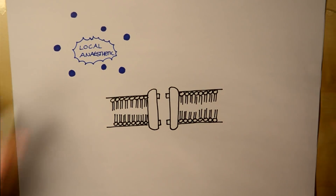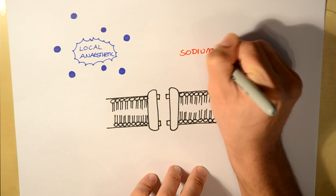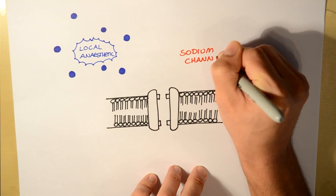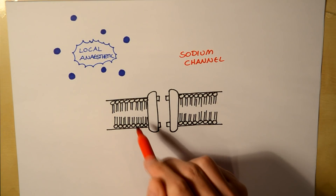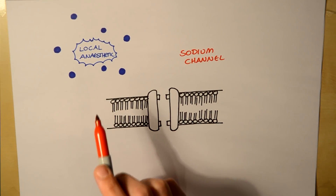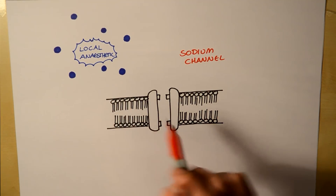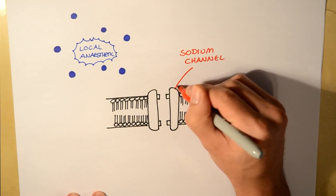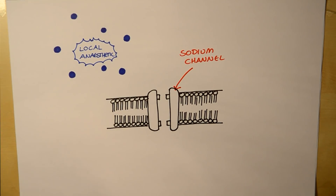Now let's think about how local anaesthetics actually work in the body. Here I've drawn a sodium channel sitting in the nerve, surrounded on both sides by a lipid bilayer. The local anaesthetic — placed on the skin or injected — wants to block this sodium channel in order to stop sodium from passing through and to stop nerve transmission.